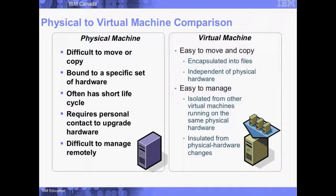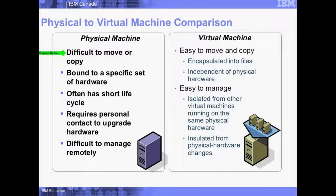This slide compares the differences between virtual machines and physical machines. Physical machines are difficult to move or copy — if I need to send a physical machine from Markham to Vancouver, I have to shut it down, unplug it, pack it up, ship it out, and have somebody receive and set it up. That's what we mean by difficult. It's also difficult to copy — there's no built-in cloning technology, you'd have to use some kind of third-party ghosting software.